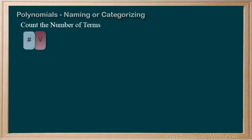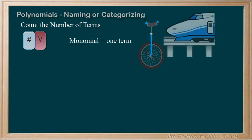A single term uses the prefix mono, like monocycle, or a monorail which rides on only one track.